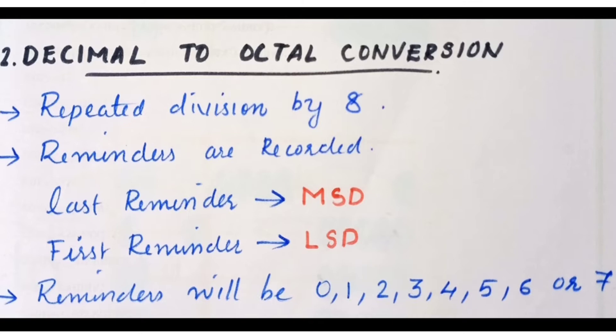The method is repeated division by 8. Take the decimal number and divide it by 8 repeatedly. Each time we divide, we record the remainder. The remainders will be in the range 0 to 7, and we use those remainders to write the octal number.